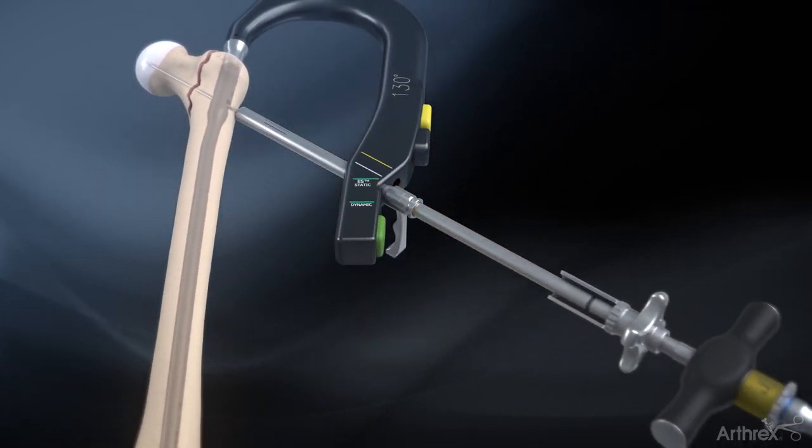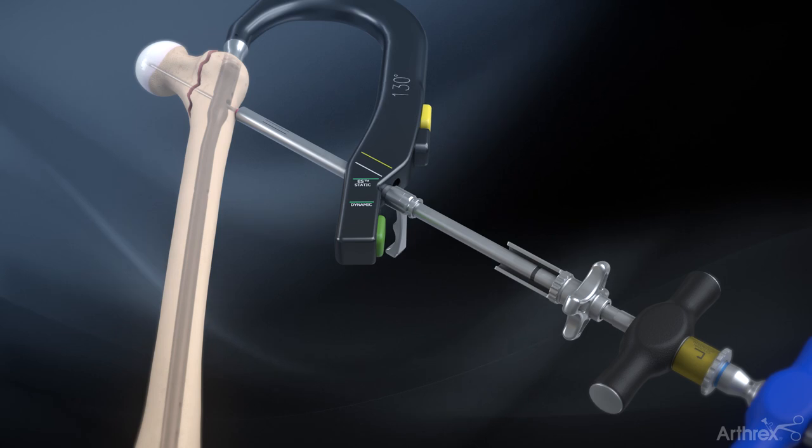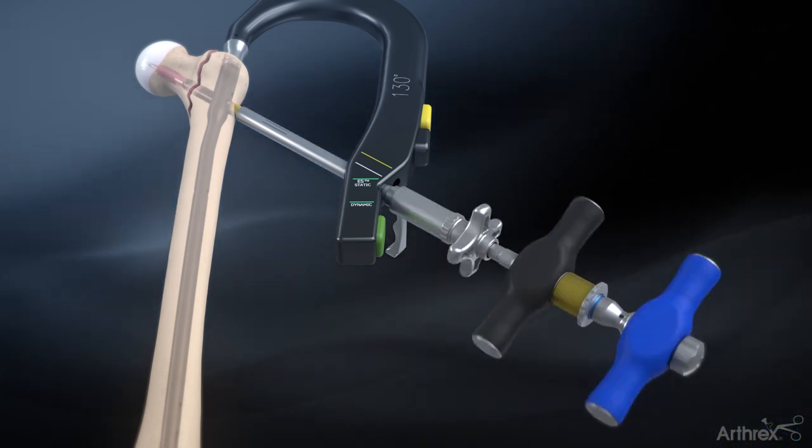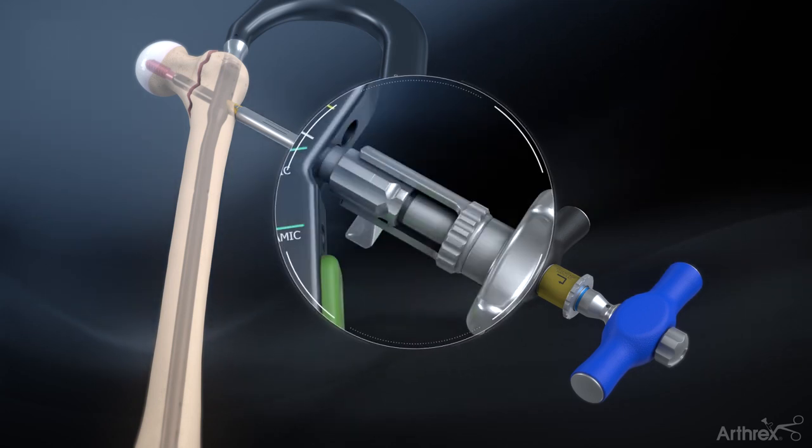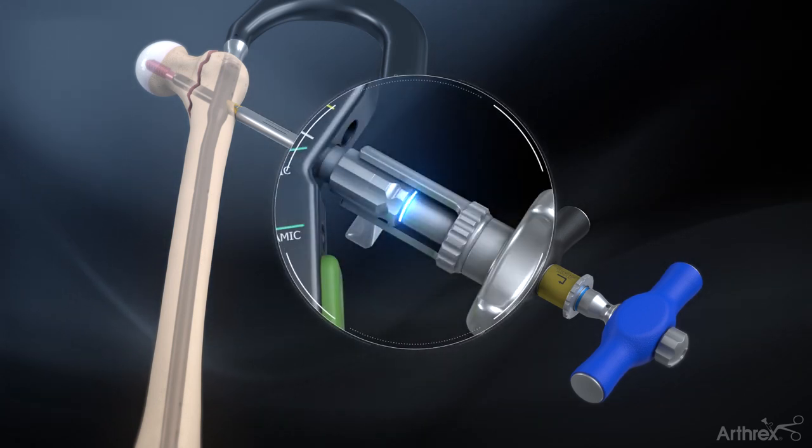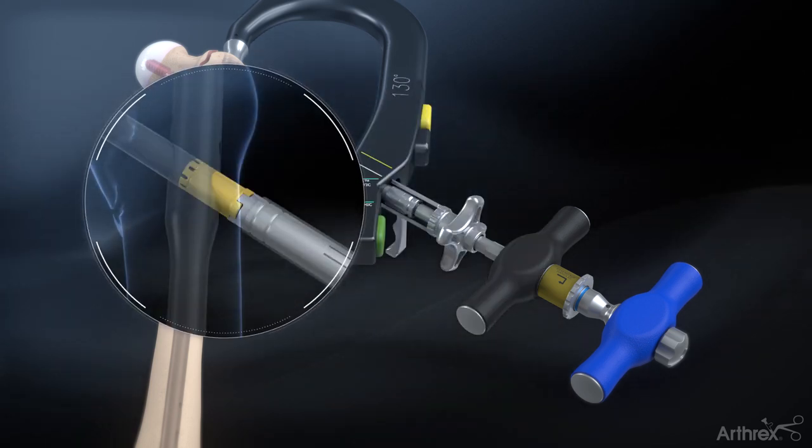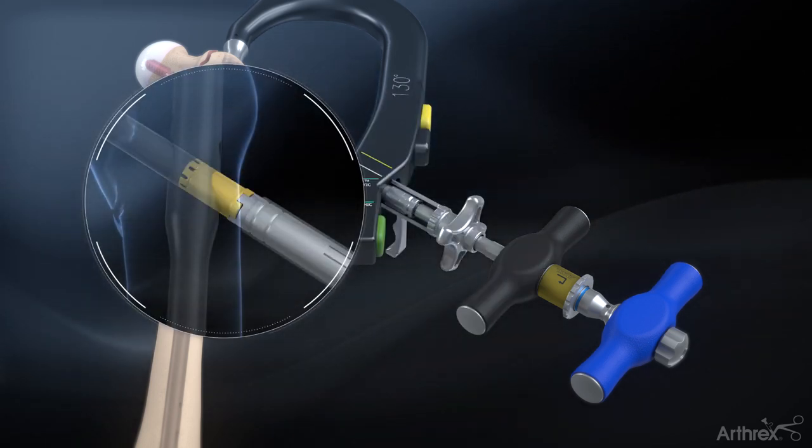Slide the lag screw inserter assembly over the guide pin and through the lag screw sheath. Rotate the assembly clockwise with the blue handle. When the black laser marking on the inserter reaches the sheath, the lag screw has exited the other end of the sheath. It is recommended to insert the lag screw further if intraoperative compression is planned.